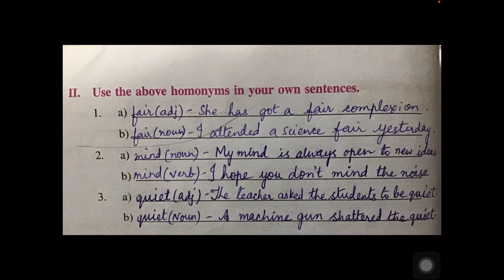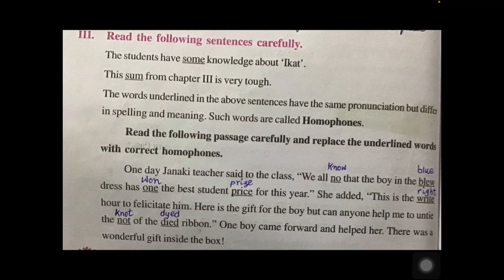Now, how will you use these words in sentences? Fair as adjective: 'She has got a fair complexion.' Fair as noun: 'I attended a science fair yesterday.' Mind as noun: 'My mind is always open to new ideas.' Mind as verb: 'I hope you don't mind the noise.' Quiet as adjective: 'The teacher asks the students to be quiet.' Quiet as noun: 'A machine gun shattered the quiet.' Write this vocabulary exercise, including the meanings and sentences, in your notebook.